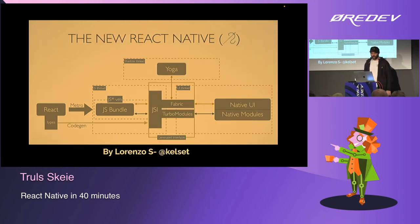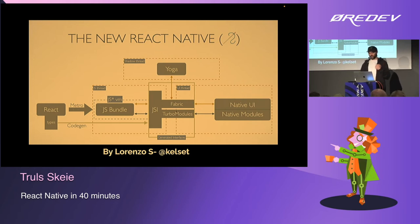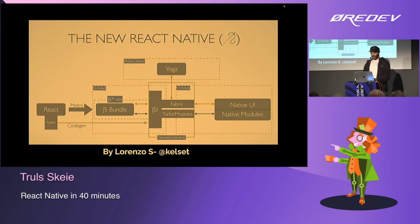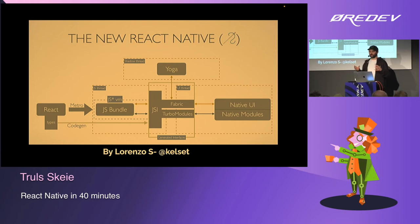This is the new architecture. There are a lot of the same concepts — React, the Metro Bundler, the JavaScript bundle — but three new concepts are introduced: the JSI (JavaScript Interface), Fabric which is the new renderer supporting React 18, and Turbo Modules. All of these new concepts are now written in C++.